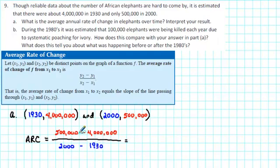So, what we can see is that the elephants decreased by 3,500,000, and this occurred over a 70-year time period. So, if we divide negative 3,500,000 by 70, then we end up with minus 50,000.